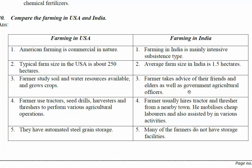In the USA, farmers study soil and water resources available and grow crops accordingly. In India, farmers take advice from friends, elders, and government agricultural officers. In the USA, farmers use tractors, seed drills, harvesters to perform agricultural operations, while in India farmers usually hire tractors and mobilize cheap laborers. USA farmers also have automated steel grain storage, whereas many farmers in India do not have storage facilities.